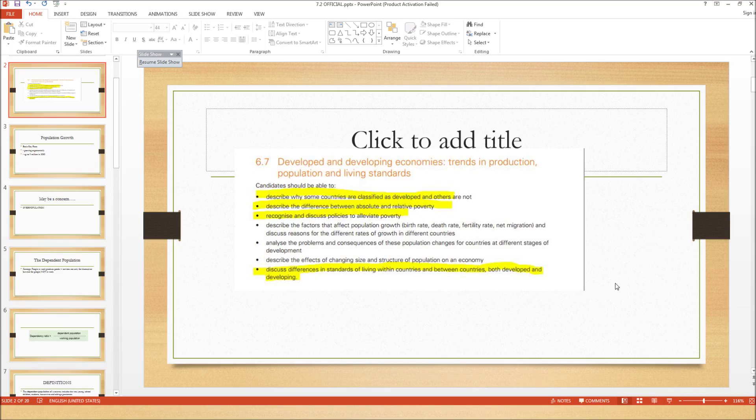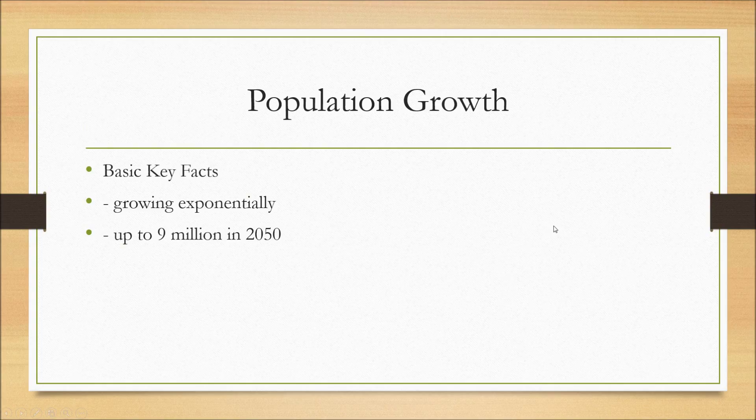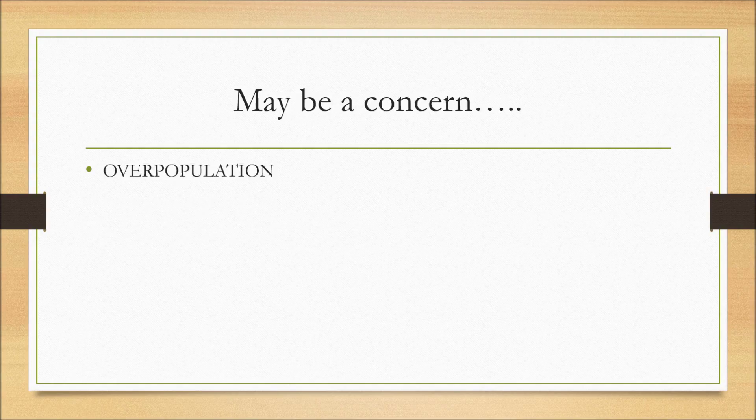So let me start it off with some basic key facts to get you guys in the mood. So population growth, basically the population grows exponentially and it grows up to 9 million. This is the projected figures up to 9 million in 2050.